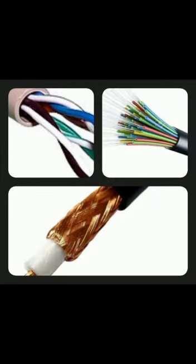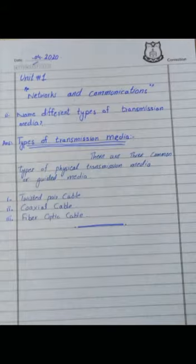There are 3 common types of physical transmission media: guided media — twisted pair cable, coaxial cable, and fiber optic cable. On the screen you can see an image of transmission media, and the method of writing the question is also available.